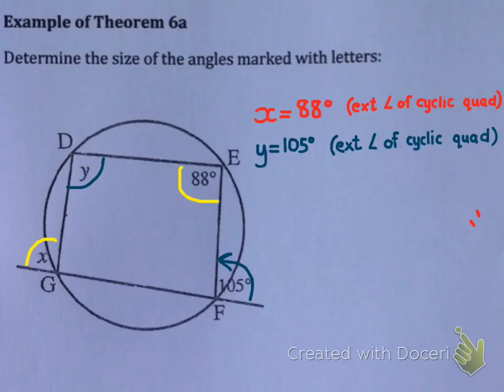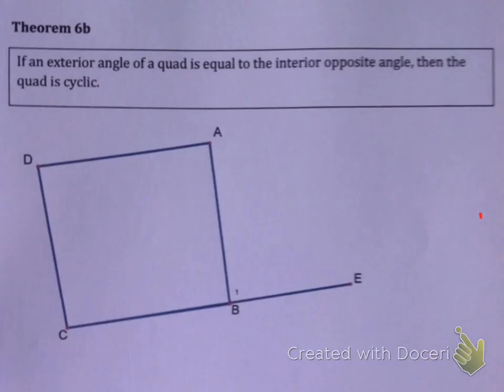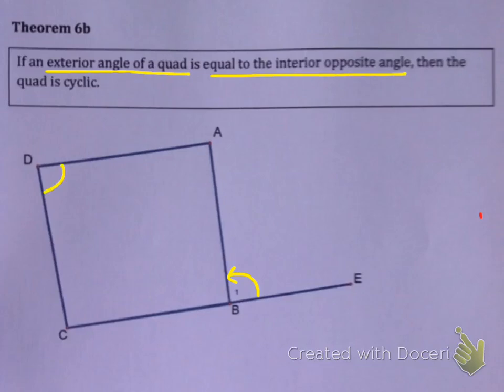So it's pretty easy. Now let's have a look at the converse, which is theorem 6b. Theorem 6b says: if you have an exterior angle of a random quadrilateral — notice there's no circle, so you're not told that this is cyclic — but if you're told that the exterior angle equals the interior opposite angle, then you can prove that this quad is cyclic.